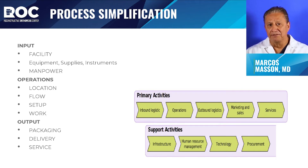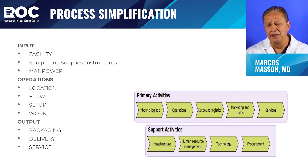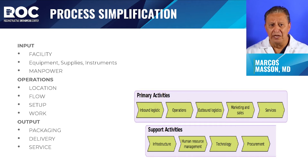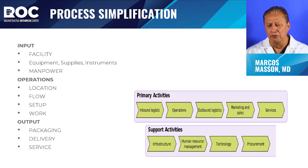The specifics of input require knowing your facility, equipment, supplies and instruments, and the manpower necessary to achieve your goals. Operations is what manufacturing does or what building construction does — it requires location, an analysis of flow, what the setup is, and what the work involved is. Finally, the output is packaging, delivery, and service — making sure that everything functions perfectly and the customer is satisfied.